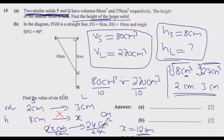So 12 cm is the answer — the height of the larger solid is 12 cm. Remember: when given volumes to find proportionate ratios, first simplify them to their simplest form, then find the cube root. If you are given areas, find the square root instead.